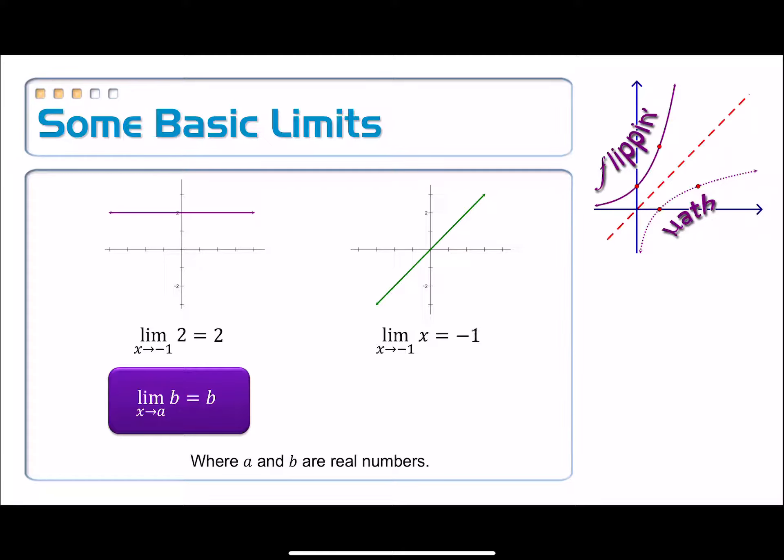Looks like the y values are approaching also negative 1 from either side, and the value of that limit is negative 1. Notice that this one is essentially just a direct substitution. So, in general, this one is the limit as x approaches a of x is just equal to a. It's just direct substitution. And again, that's the first thing that we want to try whenever we are evaluating our limits.